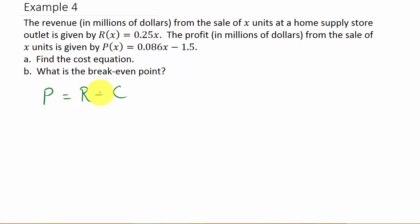So to find the cost function, if I add c to both sides, and I subtract p, then that's going to give me C equals r minus p. So I move the c over here, so that's plus c, move the p over here, so that's minus p. So there's my cost. Alright, so let's go ahead and find our cost function.